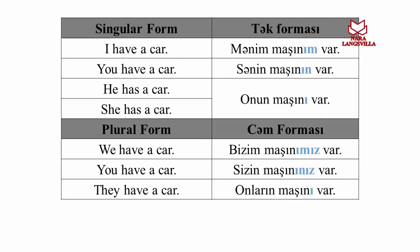One more example. Singular form — tək forması. I have a car. Mənim maşınım var. You have a car. Sənin maşının var. He/she has a car. Onun maşını var.